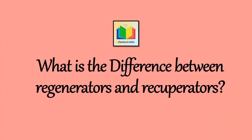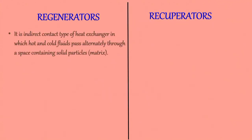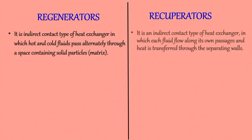Next question: what is the difference between regenerators and recuperators? A regenerator is an indirect contact type of heat exchanger in which hot and cold fluids pass alternately through a space containing solid particles called a matrix. A recuperator is also an indirect contact type of heat exchanger, but in which each fluid flows along its own passages and heat is transferred through the separating walls.